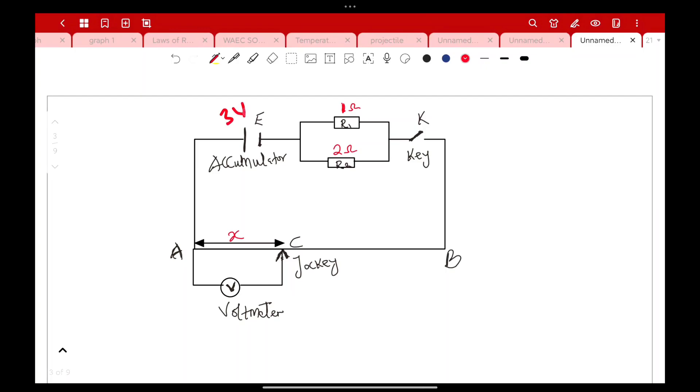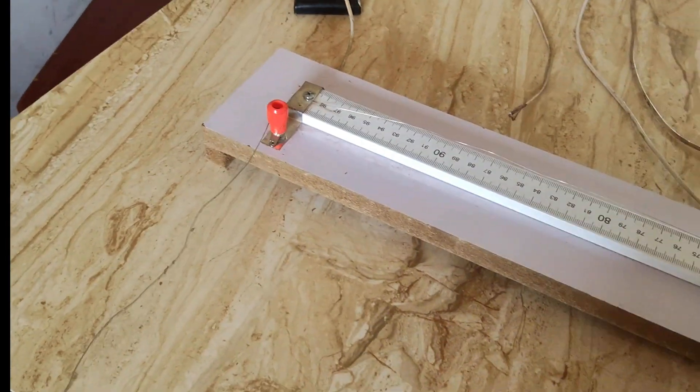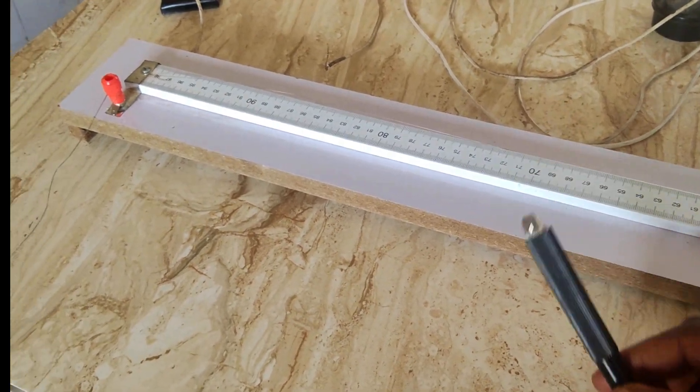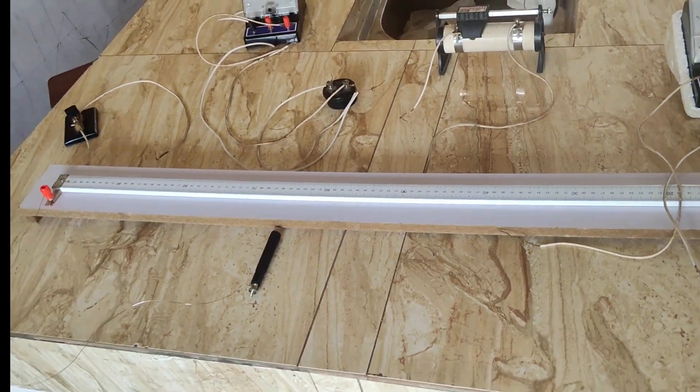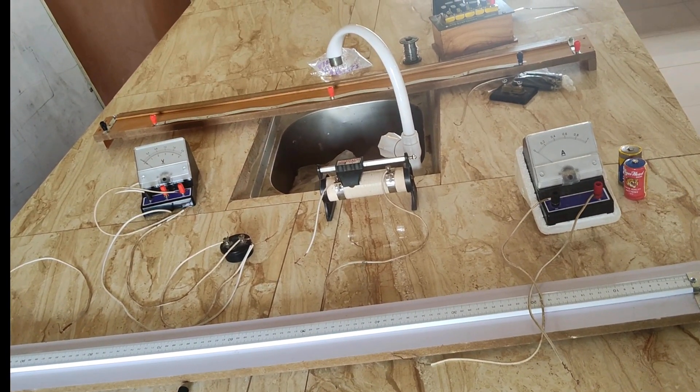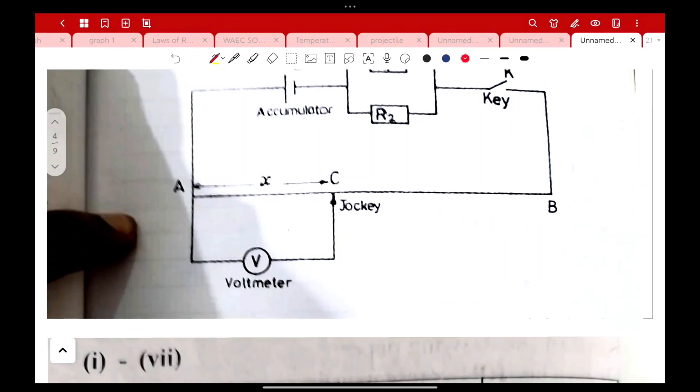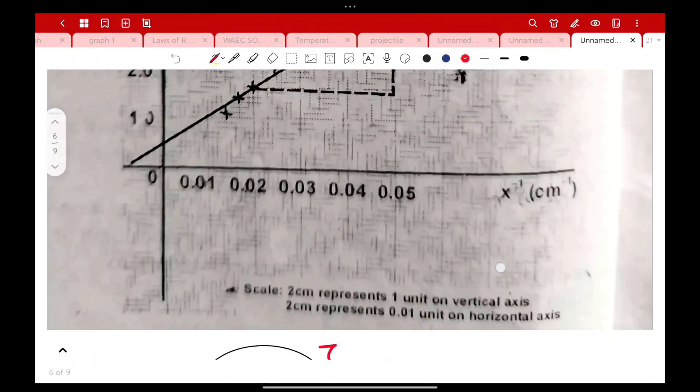As you look at this, you have a 3 volt battery, that is 1.5 volt and 1.5 volt. Then if you connect them in series you are going to have a 3 volt battery. You have a potentiometer, this is how it looks like, and this is your jockey. You'll be using it to touch the point at which it has been marked in the equation.